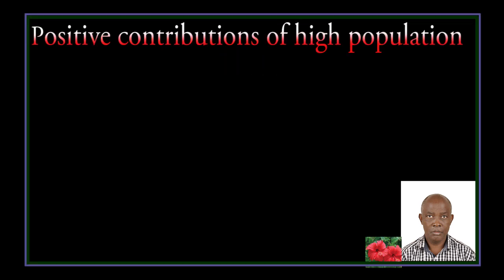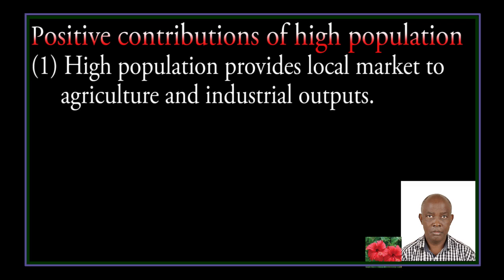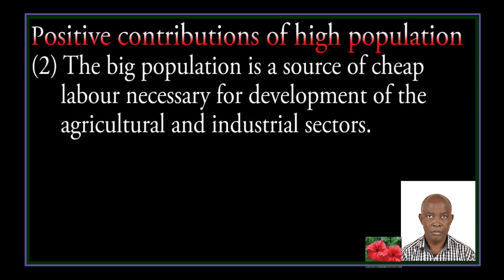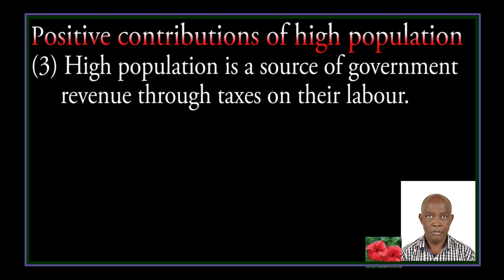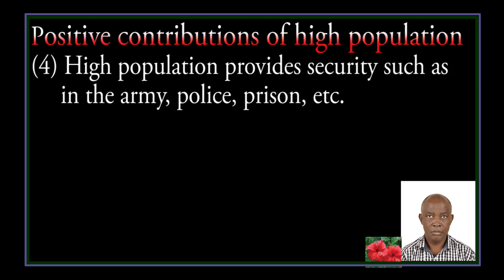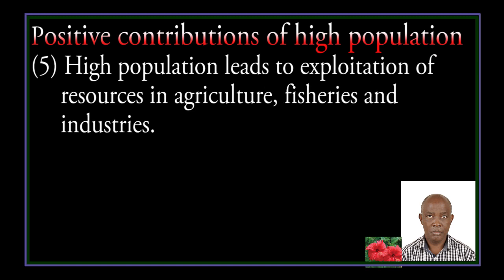Positive contributions of high population: high population provides a local market for agriculture and industrial outputs. A big population is a source of cheap labor necessary for development of agriculture and industrial sectors. High population is a source of government revenue through taxes on their labor. High population provides security such as in the army, police, prison and so on. High population leads to exploitation of resources in agriculture, facilities and industries.